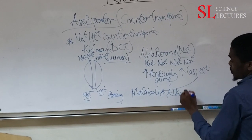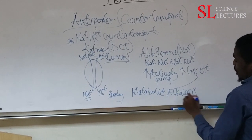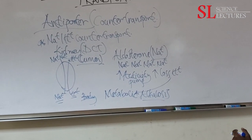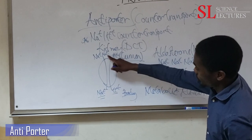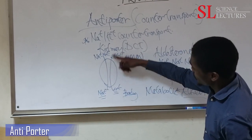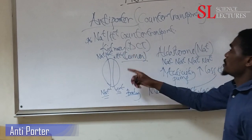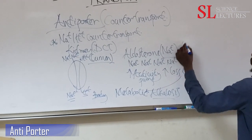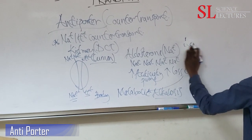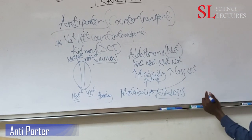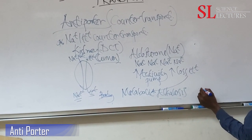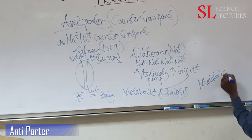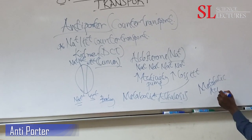Metabolic alkalosis results from excess loss of hydrogen ions. The opposite occurs when the pump is not very active — fewer hydrogen ions leave the body, and excess hydrogen ions accumulate, resulting in an acidic condition called metabolic acidosis.